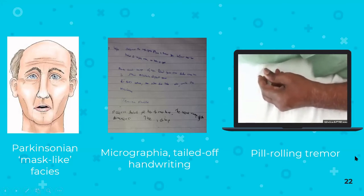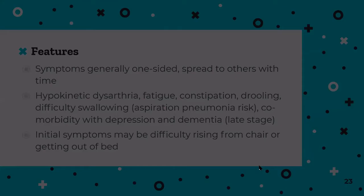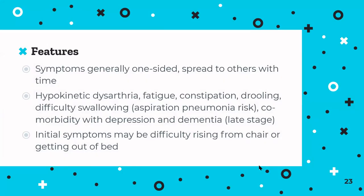The tremor in Parkinson's is classically a resting pill-rolling tremor — the characteristic hand movements visible in demonstration videos. Features are usually unilateral initially, starting perhaps with a hand tremor, then spreading across that side and possibly to the other, though there is usually a preponderance for one side. Symptoms spread gradually with time.